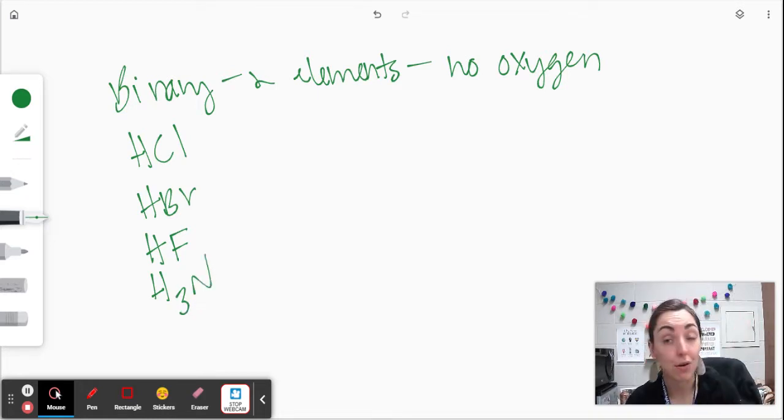So one thing, notice they all start with H because they're acids. Acids are always going to start with that H. They have that H plus slash hydronium ion. That's how we know it's an acid.